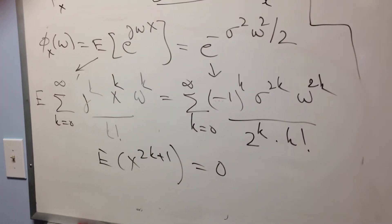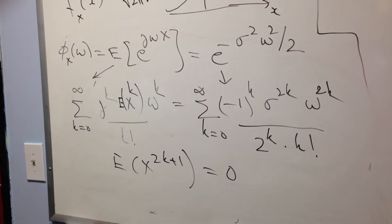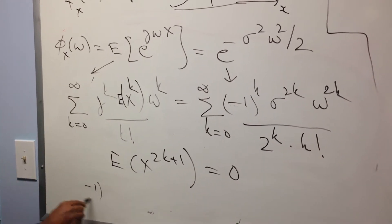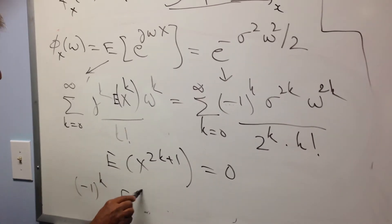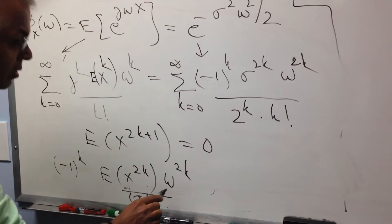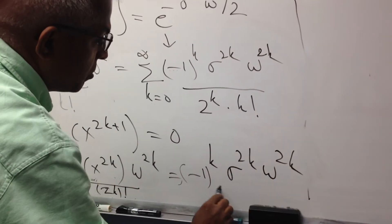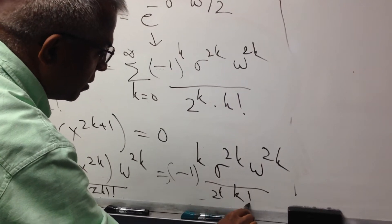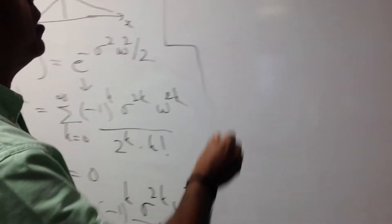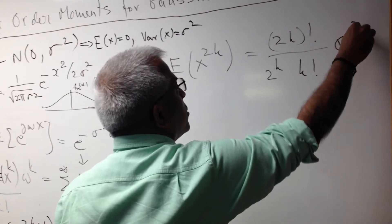Now comparing the even-order moments, put k equal to 2k. Then j to the power 2k is minus 1 to the power k. Matching corresponding terms, the expected value of X to the power 2k times omega to the power 2k over 2k factorial equals minus 1 to the power k times sigma to the power 2k times omega to the power 2k, over 2 to the power k times k factorial. Canceling the common factors, the expected value of X to the power 2k equals 2k factorial over 2 to the power k times k factorial, times sigma to the power 2k.